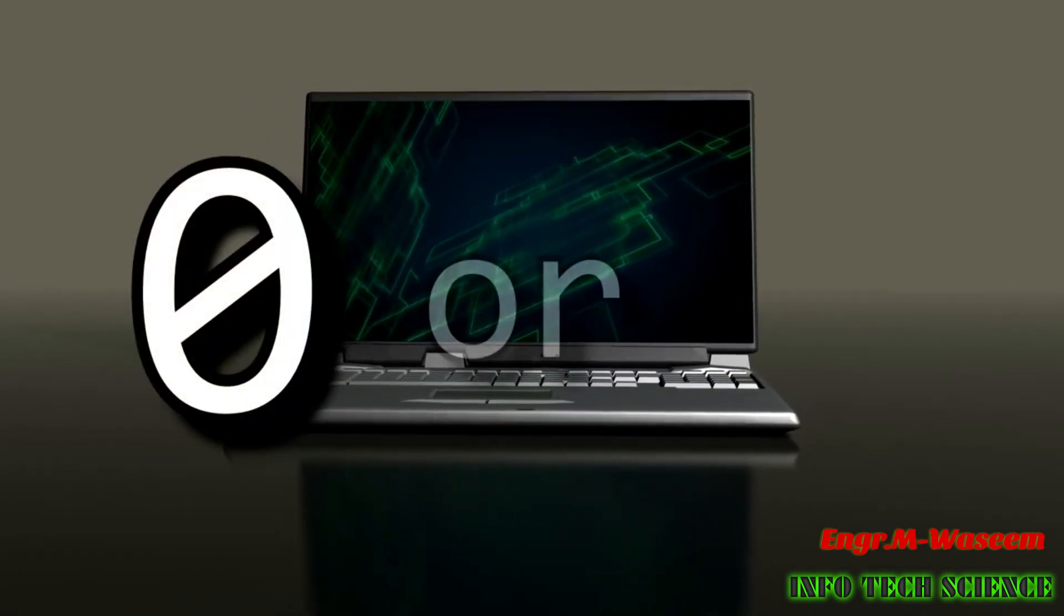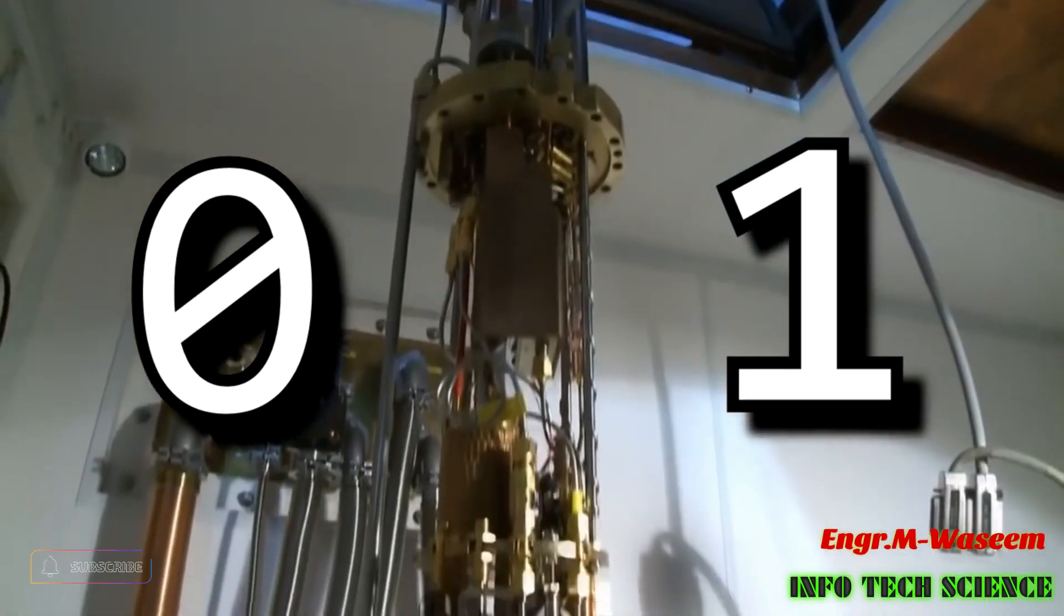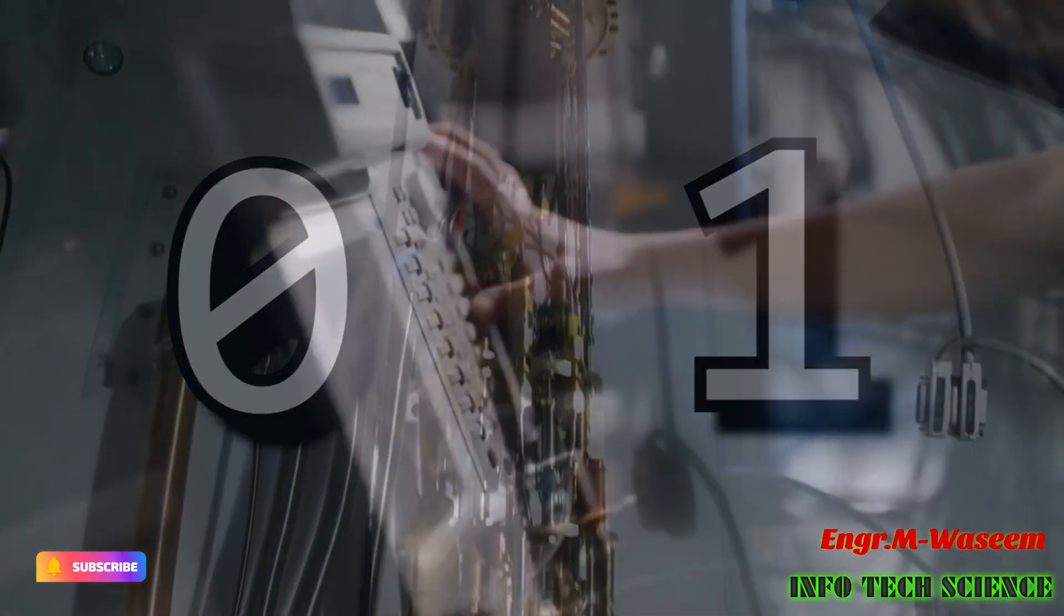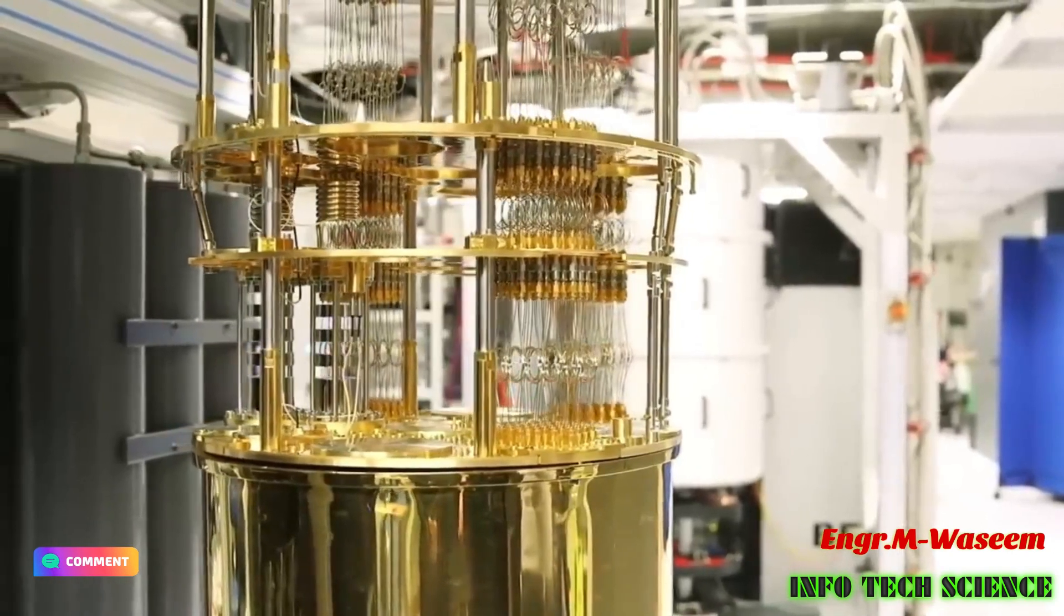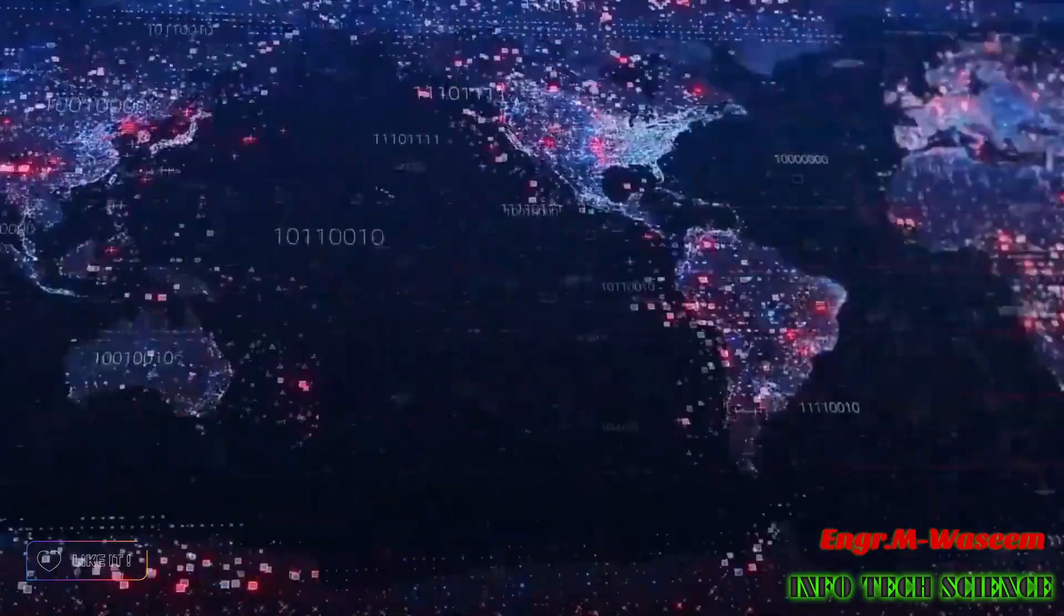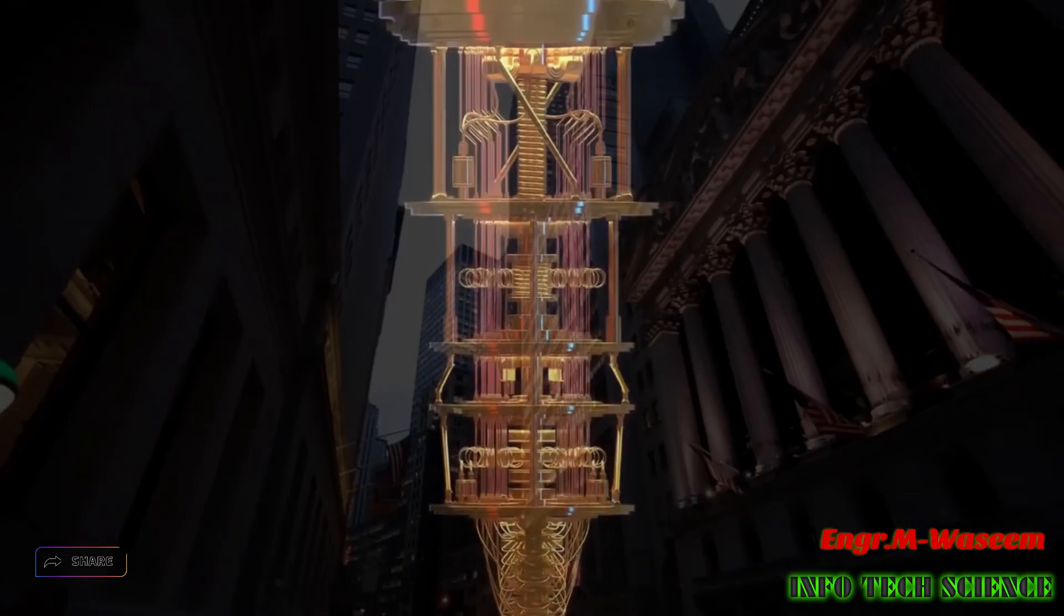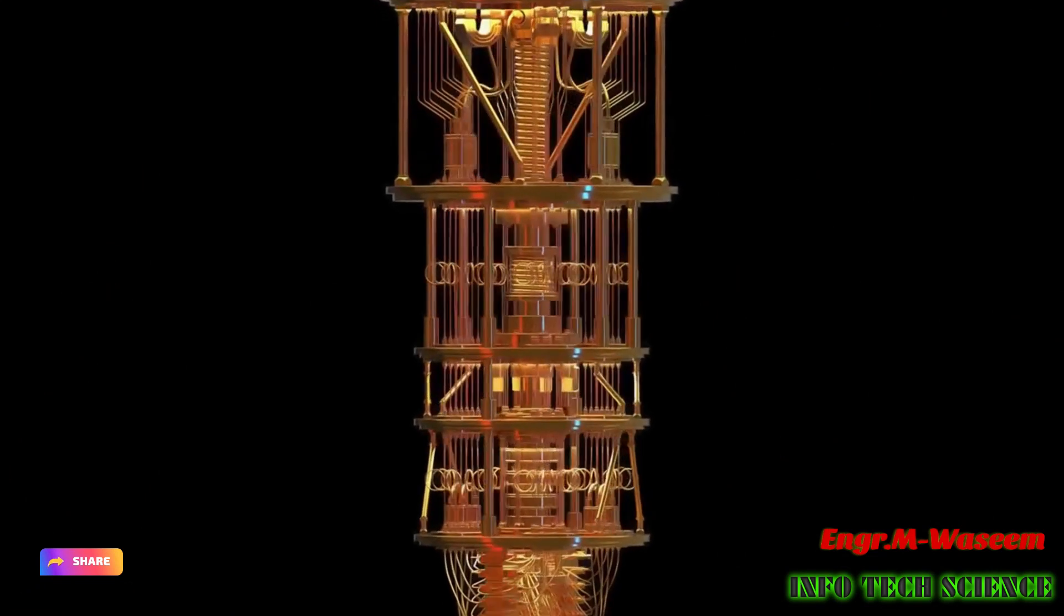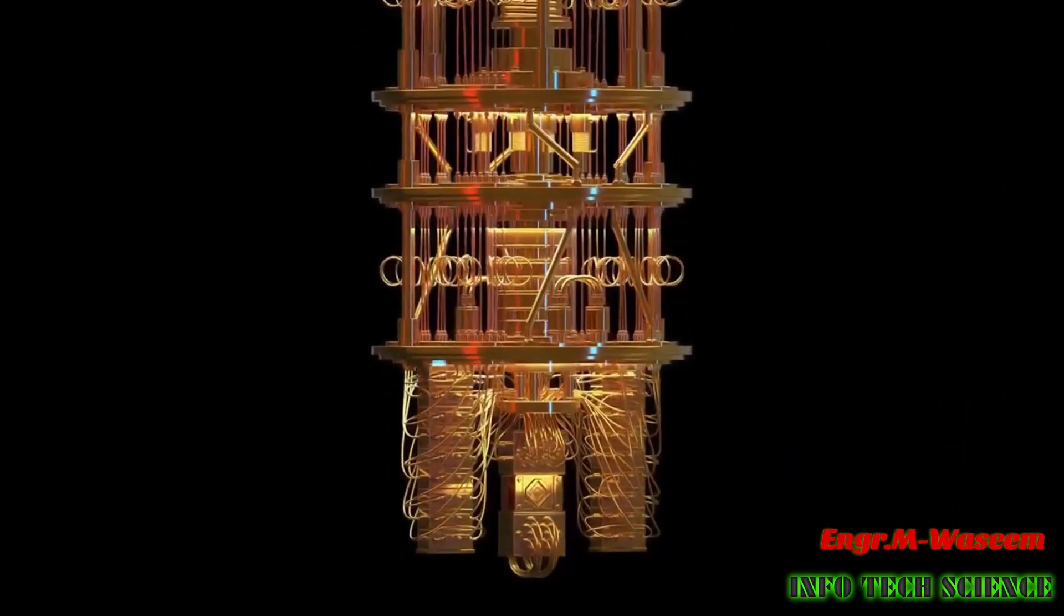When scientists and engineers encounter difficult problems, they turn to supercomputers. These are very large classical computers, often with thousands of classical CPU and GPU cores. However, even supercomputers struggle to solve certain kinds of problems. If a supercomputer gets stumped, that's probably because the big classical machine was asked to solve a problem with a high degree of complexity.